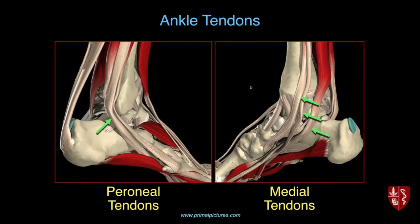Medially, just think of the deltoid ligament complex. It has some deep fibers that go between the tibia and the talus, and more superficial fibers that go between the tibia and the calcaneus, and some of them blend into other soft tissue structures along the medial ankle. There's also a nice picture showing the posterior tibiofibular ligament and posterior talofibular ligament — a lot of this anatomy you can see really well on MRI.